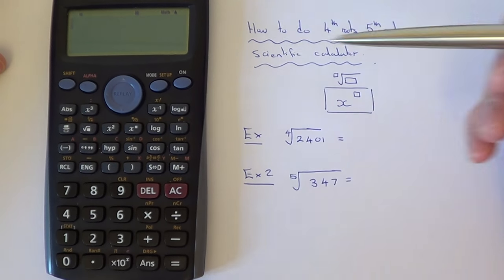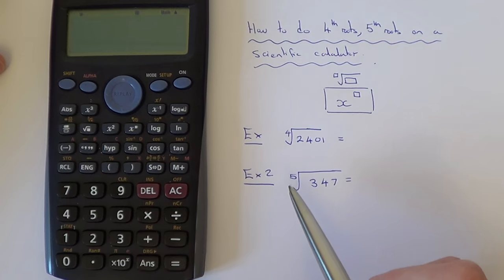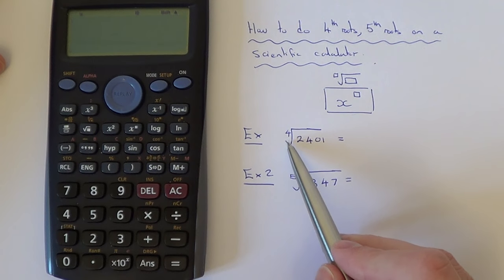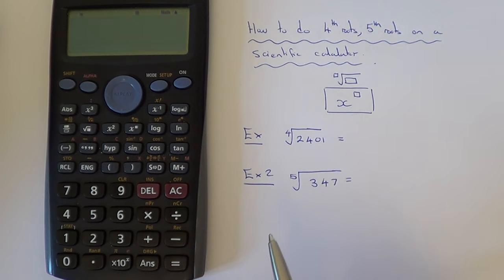Ok, so let's do a couple of examples. The first one is the 4th root of 2401.